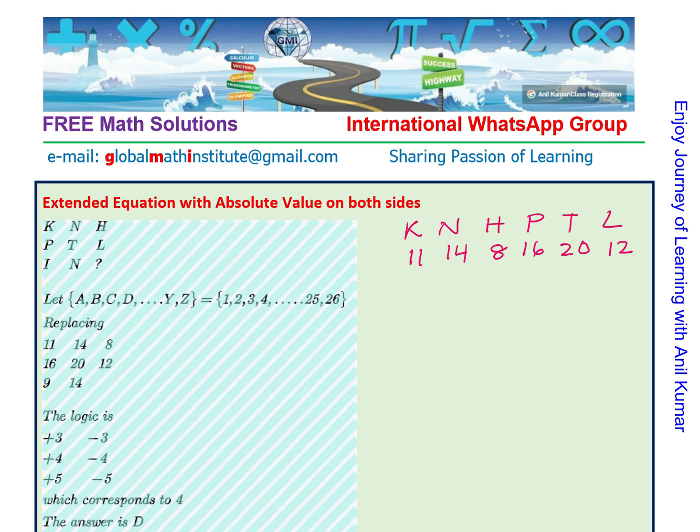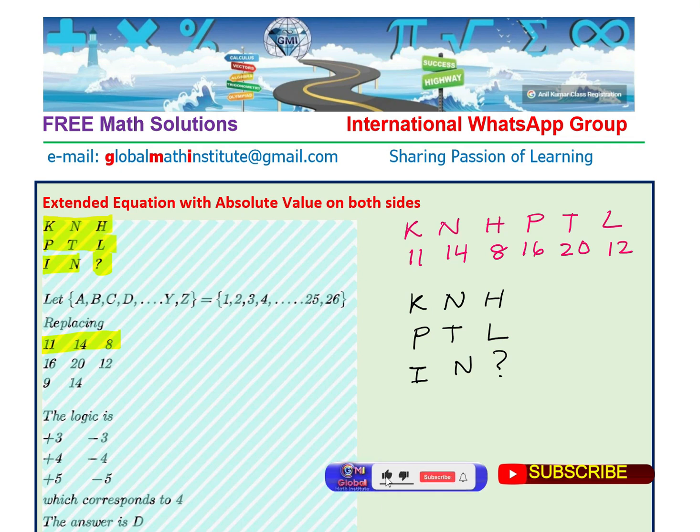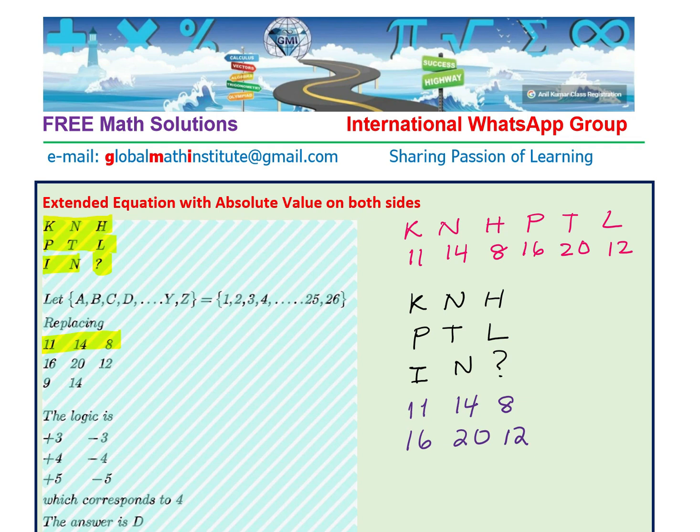So like this the numbers move on. When you try to rearrange them as Mr. Narad has done, then what you notice is that if we arrange the numbers, we are just replacing these alphabets with their values to figure out what should be the next number, the ninth number. You can see that K is the 11th alphabet, N is 14th, and H is 8. Then we have P as 16, T as 20, and L as 12.